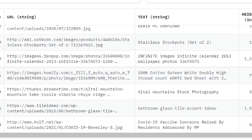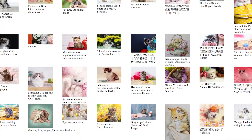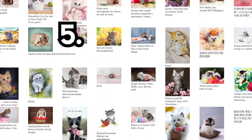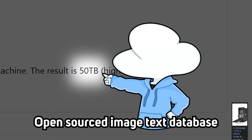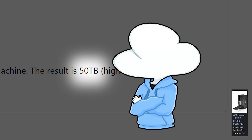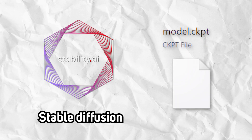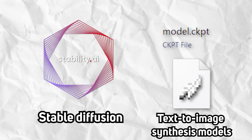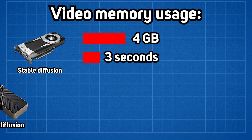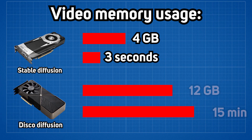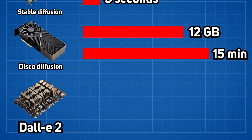The project was mainly trained on the LAION 5B database, which is a dataset full of 5.85 billion CLIP-filtered image-text pairs, and is currently the largest open source image-text database out there. Stable diffusion is one of the lightest text-to-image synthesis models, requiring at least 5 GB VRAM and generating in around 3 seconds, compared to Disco Diffusion that needs at least 12 GB, while DALL-E 2 probably cannot even run on a consumer GPU.